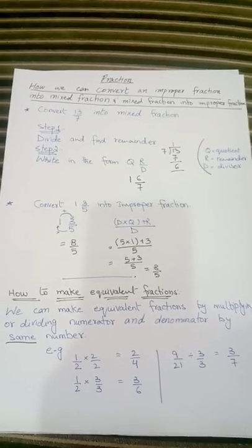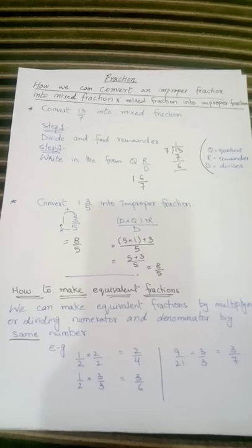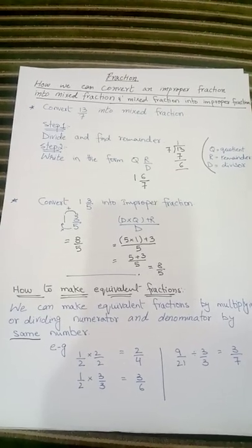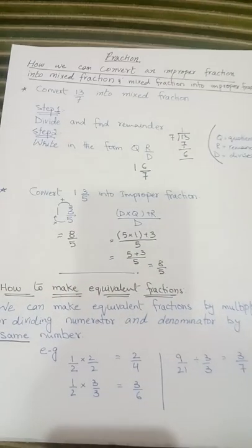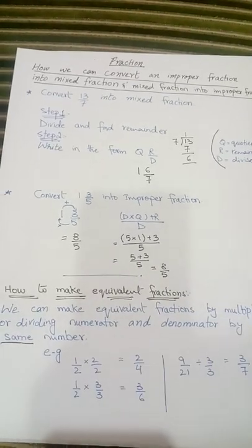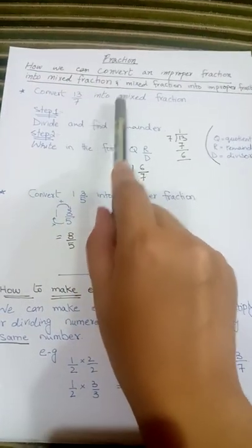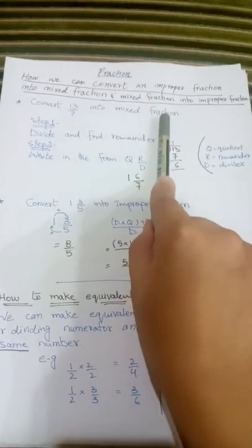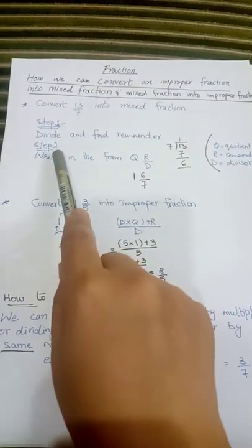Whenever the numerator is greater than the denominator, that fraction is known as an improper fraction. The question is: convert 13 upon 7. As you can see, 13 upon 7 is an improper fraction. So convert this 13 upon 7 into a mixed fraction. How we can convert this? We have to follow two steps for this.